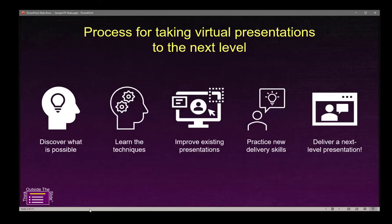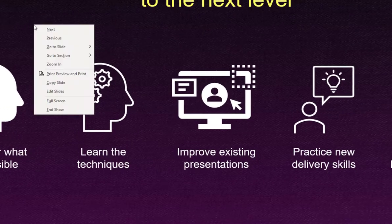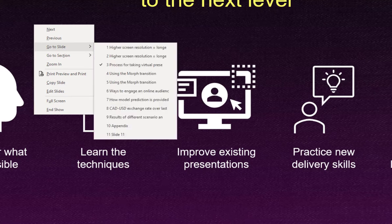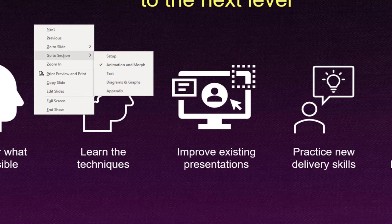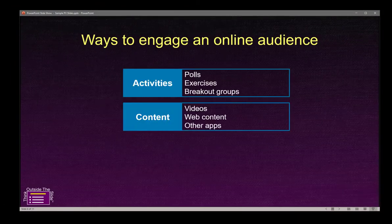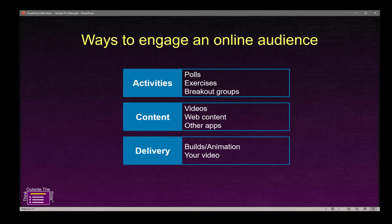In Reading View, there are a couple of valuable items on the right-click menu. Right-clicking anywhere on the slide brings up a list of options. The 'Go to Slide' option shows all the slide titles in your presentation, letting you quickly jump to any one by clicking it. There's also a 'Go to Section' option — if you've divided your PowerPoint file into sections, each section is listed and you can jump to any of them, making it easy to navigate forward or backward in your presentation.